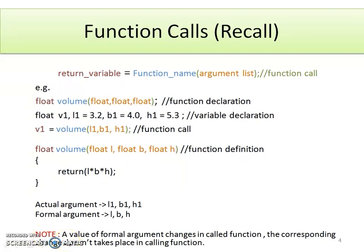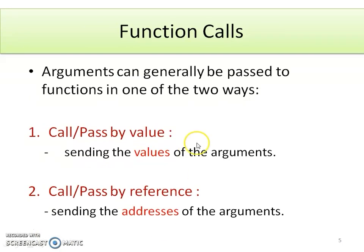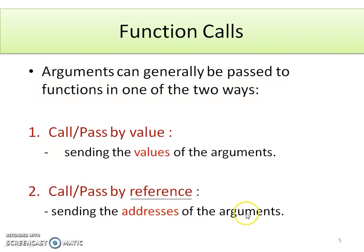Note: if the value of a formal argument changes in the called function, the corresponding change does not take place in the calling function. What is the meaning of this statement? This is what I am going to explain in this session. For function calls, there are two types: the first is call or pass by value, where we send the values of the arguments; the second is call by reference, where we send the addresses of the arguments.